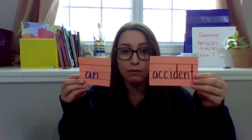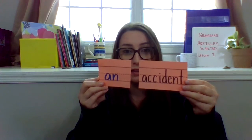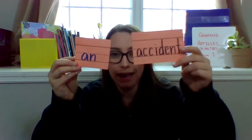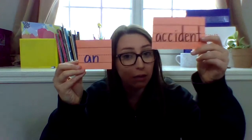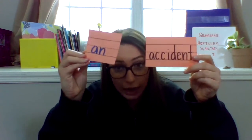How about 'accident'? Would I use 'a' or 'an'? For 'accident,' because it has a vowel sound at the beginning, I would need 'an.' An accident. 'I made an accident when I knocked over the vase.' That vowel sound at the beginning means I have to use 'an.'